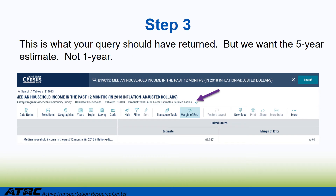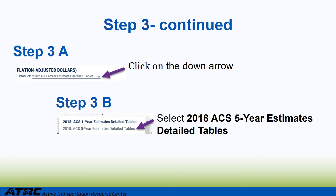Step 3: Below is a screenshot of the data that was returned from the query, but we want a five-year estimate, not a one-year estimate. Step 3a: Click on the down arrow indicated with the purple arrow. Step 3b: Select '2018 ACS 5-Year Estimates Detailed Tables.'